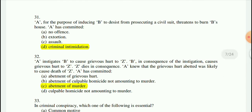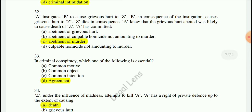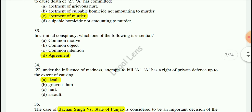Question 31: A, for the purpose of inducing B to desist from prosecuting a civil suit, threatens to burn B's house. A has committed criminal intimidation. A instigates B to cause grievous hurt to Z; B causes grievous hurt; Z dies. A knew that grievous hurt was likely to cause death. A has committed abetment of murder.